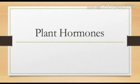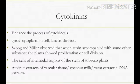In the previous class, we have seen about the plant hormone auxin. Today we can start with the plant hormone cytokinin. Cytokinins enhance the process of cytokinesis. Here 'cyto' means cytoplasm found in the cell, and 'kinesis' means division. So this cytokinin helps in cell division.